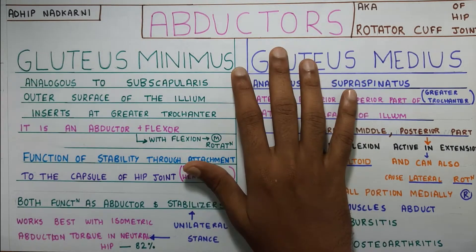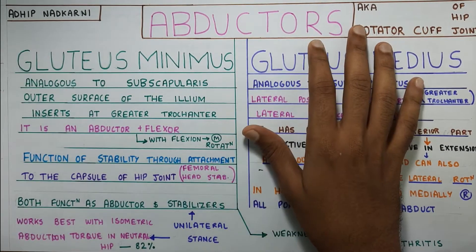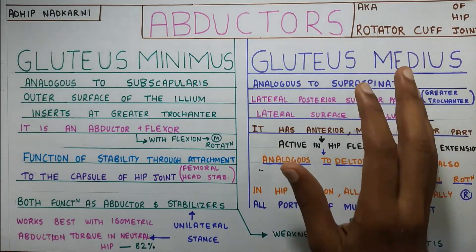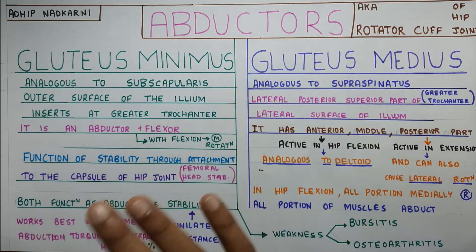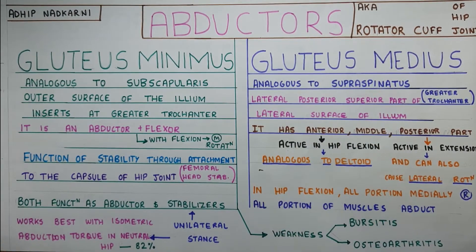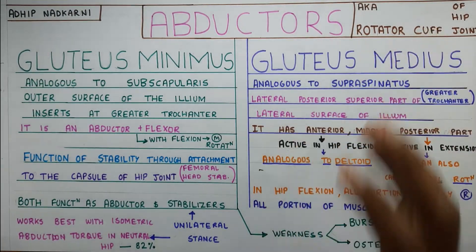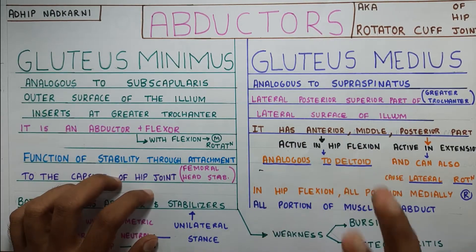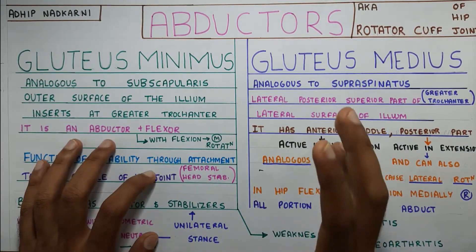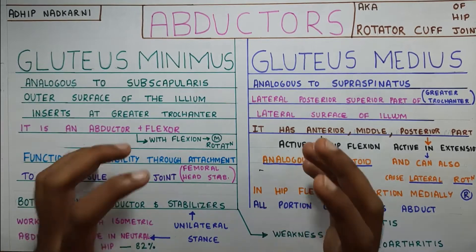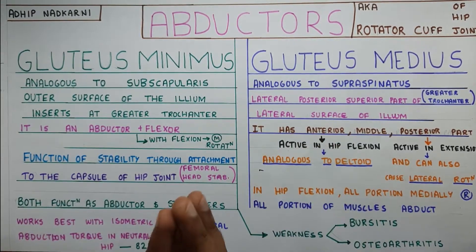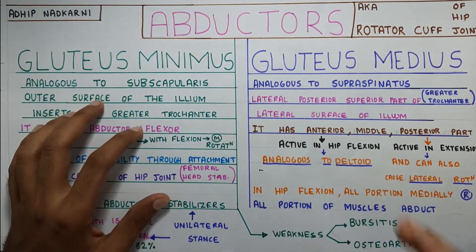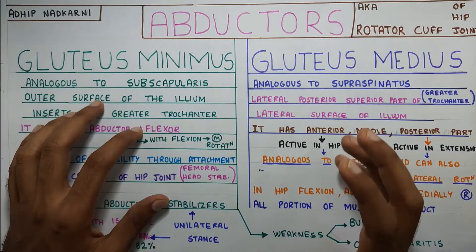Now let's look at the abductors of the hip joint, also known as the rotator cuff of the hip joint. This is a big giveaway — they are as important as the rotator cuff in the shoulder. The main function of the abductors is stabilization, just as the rotator cuff stabilizes the glenohumeral joint in the shoulder.